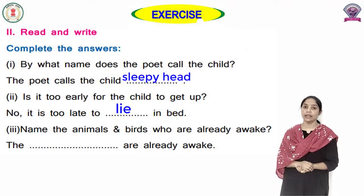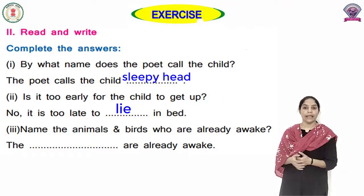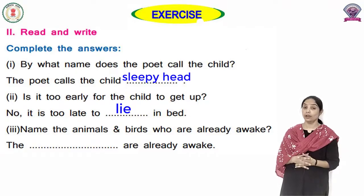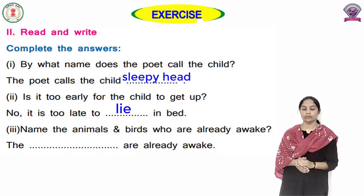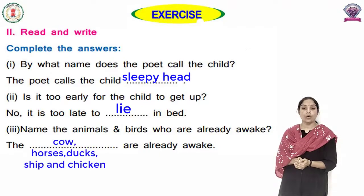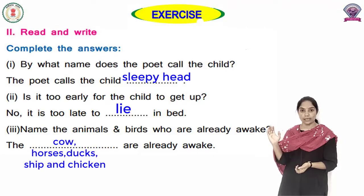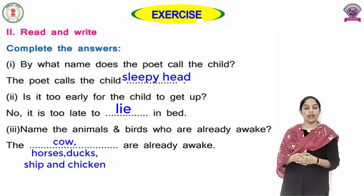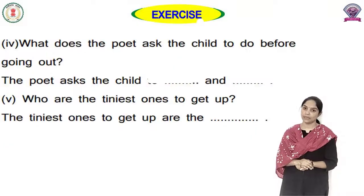Next question: Name the animals and birds who are already awake? याद है न कौन-कौन से animals and birds पहले ही जाग चुके हैं? Very good। Answer is: The cow, horses, ducks, sheep and chicken are already awake। ठीक है?